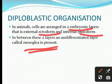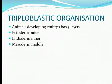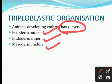So mesoglia is the undifferentiated layer present between ectoderm and endoderm. Next is triploblastic organization — as the name suggests, the developing embryo has three layers: the outer ectoderm, the inner endoderm, and the middle mesoderm. Thank you for watching, please subscribe to our channel.